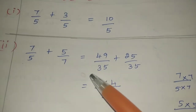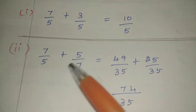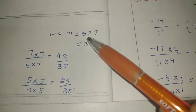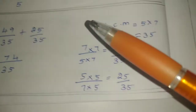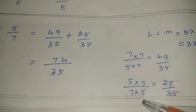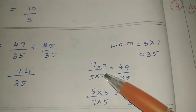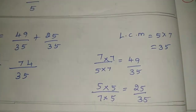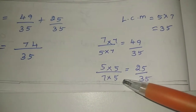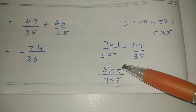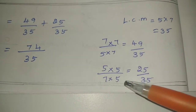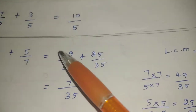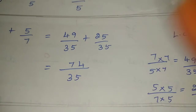Plus 5 and minus 5 by 7. So 5 and 7, 5 × 7 is 35, which is the LCM. Then 7 by 5 and 5 by 7. Denominator 7: numerator 7 × 5 is 35, and 7 × 7 is 49. Denominator 5: 5 × 5 is 25. So we have 49 by 35 and 25 by 35.